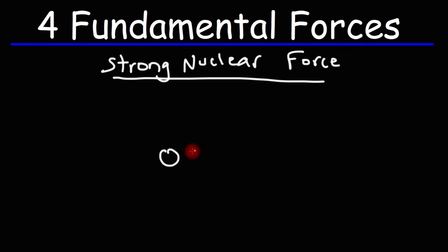So, let's draw the nucleus of a helium atom. In that nucleus, we have two protons and two neutrons. Now, the protons, they're positively charged. Whenever you have two positive charges next to each other, they are going to repel.